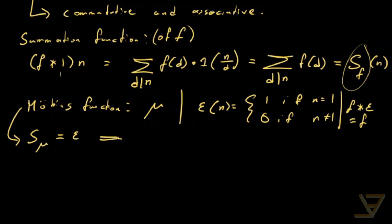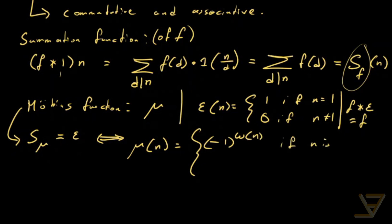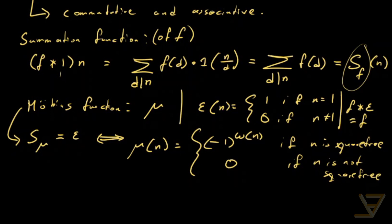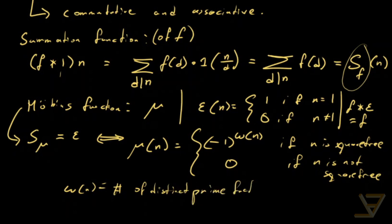We can show that S(μ) = ε if and only if μ(n) = (−1)^ω(n) if n is square-free, and 0 if n is not square-free. By square-free I mean that n is a product of distinct primes, and not square-free means it has a square factor. By ω(n) I mean the number of distinct prime factors of n.